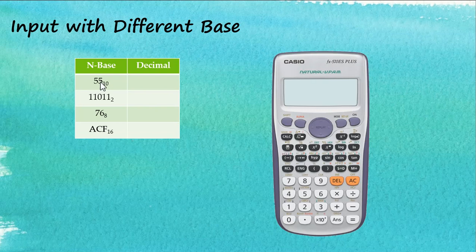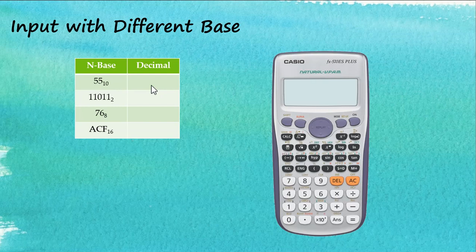The first one is base 10, which is decimal. The second one is base 2, which is binary. The third one is base 8, which is octal. And the last one is base 16, which is hexadecimal. I would like to convert all of these numbers into decimal.